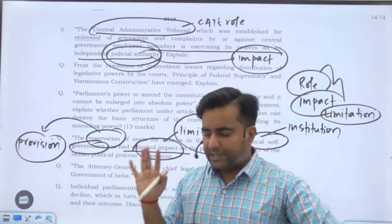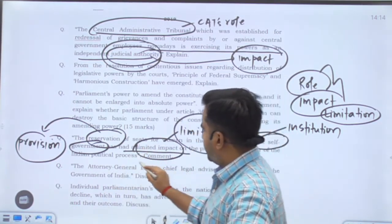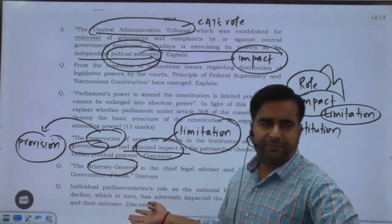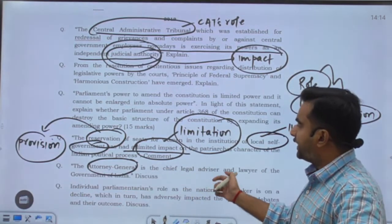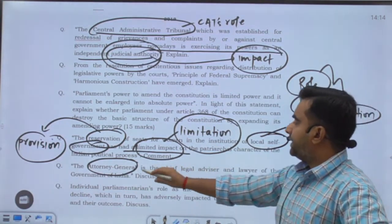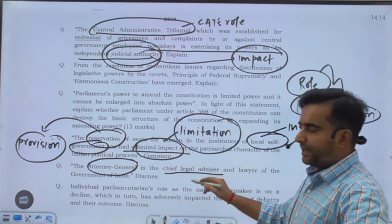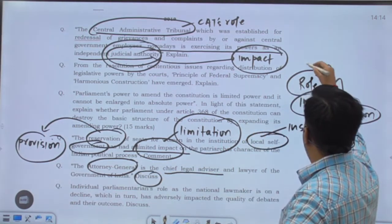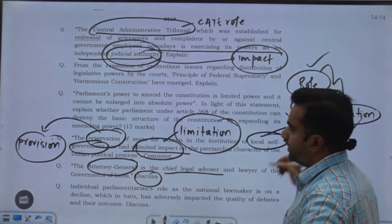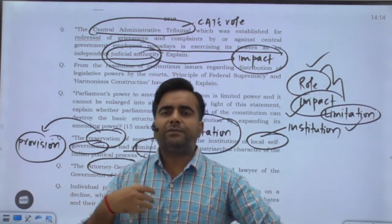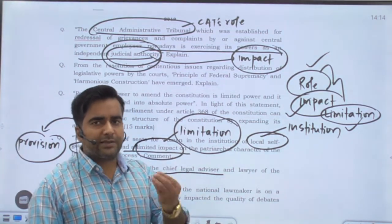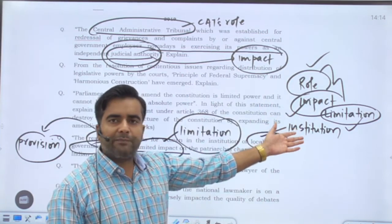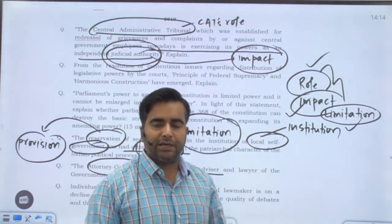Now there is a question about the Attorney General: 'The Attorney General is the chief legal advisor and lawyer of the Government of India — discuss.' Everything has been asked in one plain statement. You need to discuss the role, the impact, and the limitations of the Attorney General. So when you discuss a plain statement, you talk about the role, what impact it has had after coming into existence, and what limitations it faces.